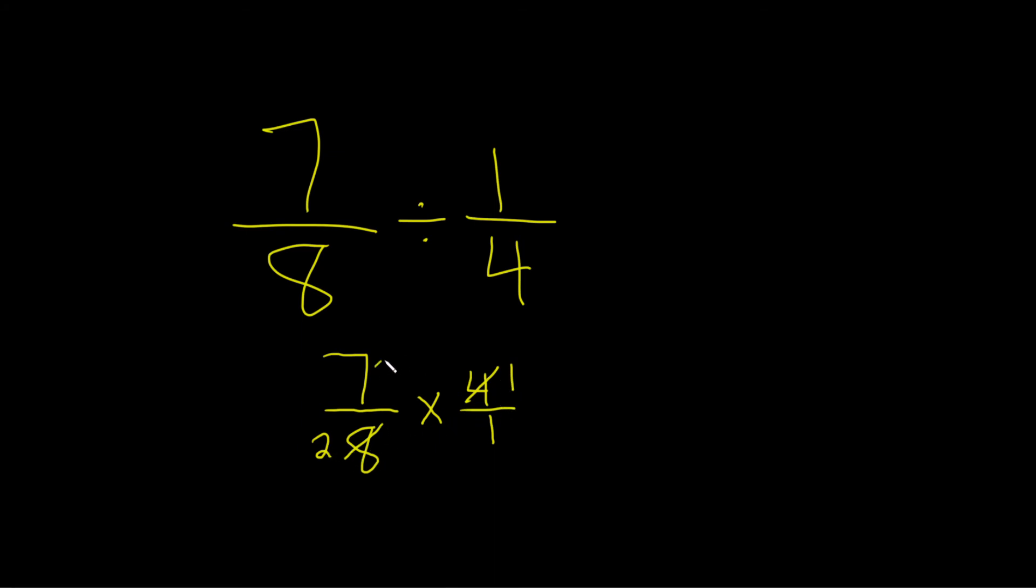And now we can multiply. 7 times 1 is equal to 7. You just multiply straight across. 2 times 1 is equal to 2.